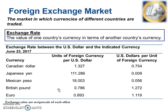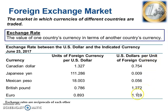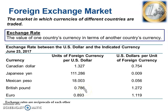Another example: if you were going to travel to England, which uses the British pound, you would get 0.786 pounds per U.S. dollar. Alternatively, you would pay 1.272 U.S. dollars per pound. These numbers are reciprocals of each other — 1 over 0.786 gives you 1.272, and 1 over 1.272 gives you 0.786. It's an easy conversion to go from one angle to another.